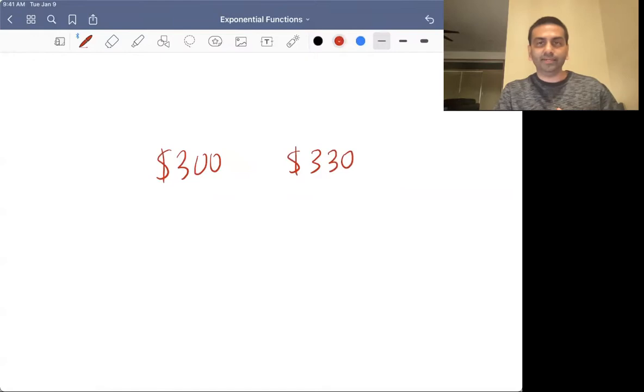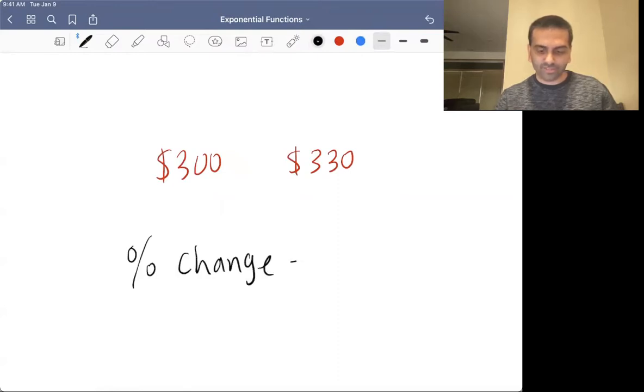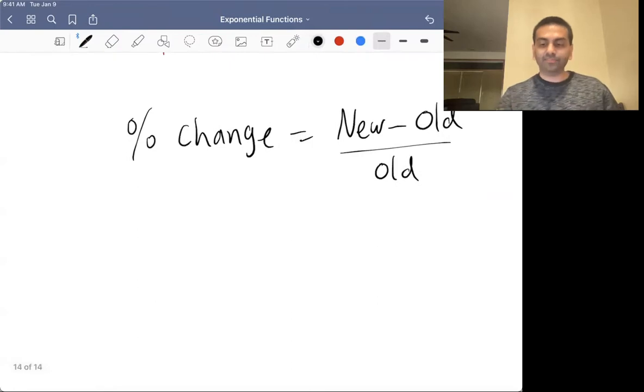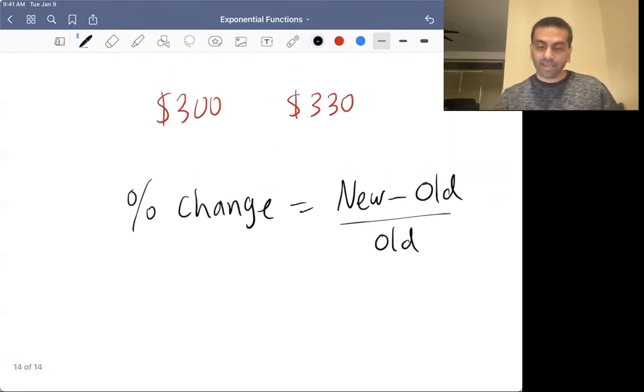So it's like, what percentage did you grow by in that one year? So if in one year, you grew by this much, well, this is just, you might remember this from a previous math class, but the definition of percent change is just always the new value minus the old value divided by the old value. And this then gives you the percentage as a decimal.